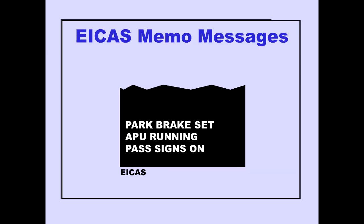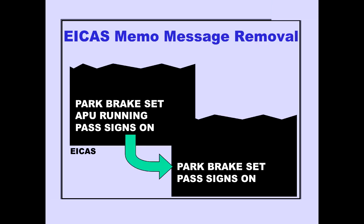White memo messages are displayed at the bottom of the primary ICAST display message area. These messages are reminders of the current state of certain normal conditions. The newest memo message is displayed at the bottom of the list, and all other memo messages move up. A memo message is no longer displayed when the condition that caused the message no longer exists.